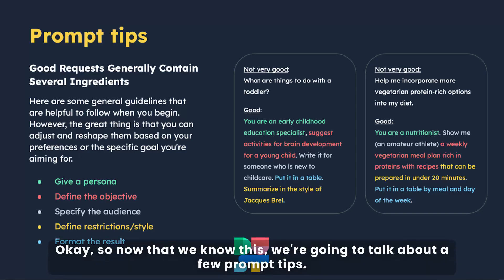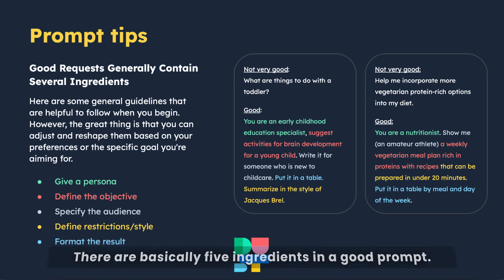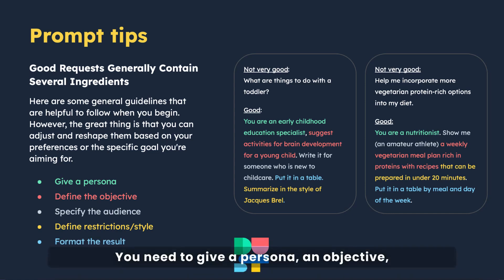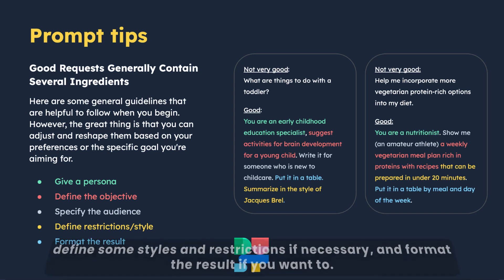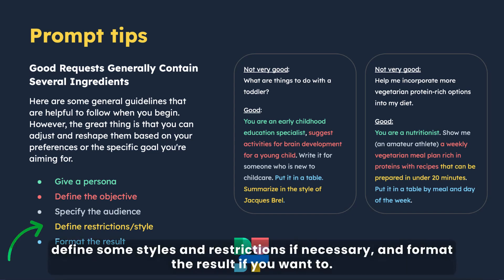Now that we know this, we're going to talk about a few prompt tips. There are basically five ingredients in a good prompt: you need to give a persona, an objective, specify the audience, define some size or restrictions if necessary, and format the result if you want to.